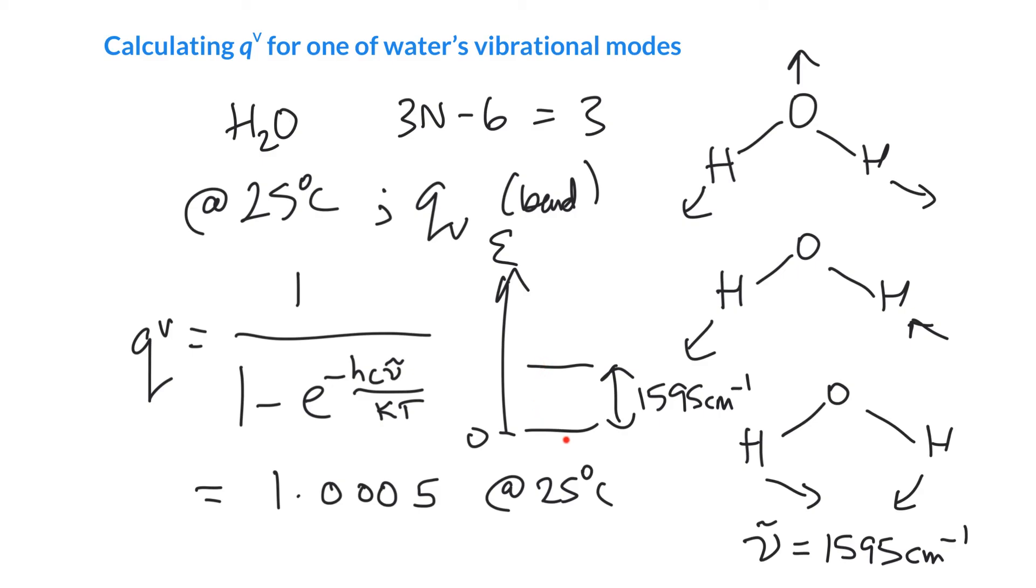And you might imagine as you increase the temperature, we would expect to access those higher levels. And we can calculate q^v. So q^v at 100 degrees C, if we turn it into steam, we get a value of 1.002. So only 2 in 1,000 molecules can access the second vibrational state there.